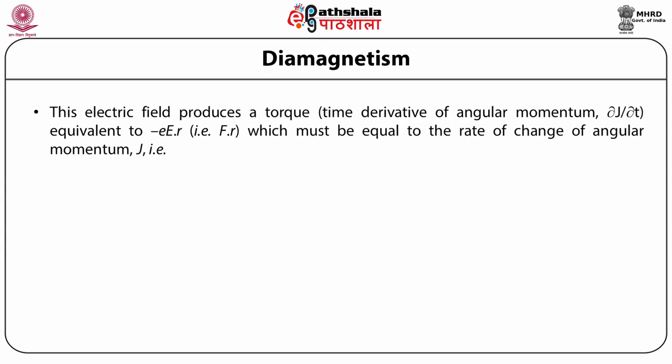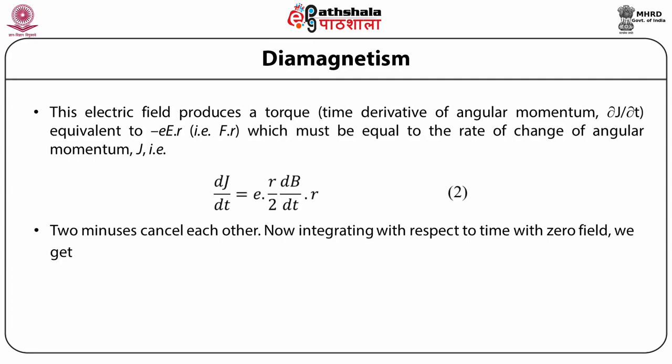Hence, the electric field will be equal to minus μ₀r/2 · ∂H/∂t. This electric field produces a torque, which is the time derivative of angular momentum, that is ∂J/∂t, equivalent to minus eEr, where eE is force, which must equal the rate of change of angular momentum J. That is, dJ/dt equals er/2 · dB/dt · r. The minus signs cancel each other, giving a positive value.